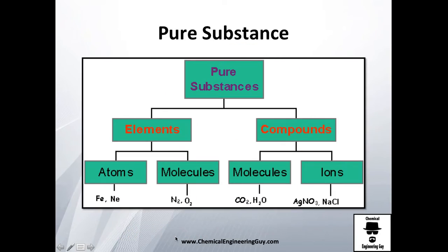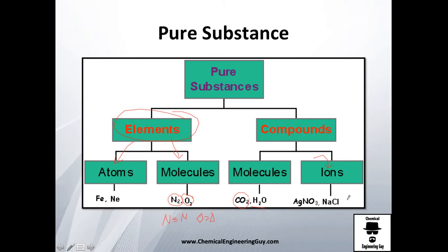Pure substances may be divided into elements, which are either atoms or molecules of the same type. If not the same type, they form molecules in the form of compounds such as CO2 and water. You may also have ions, as shown here in this diagram.